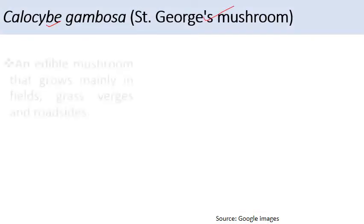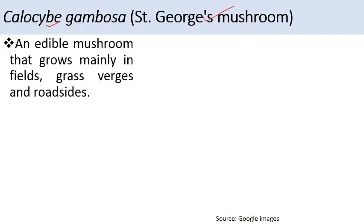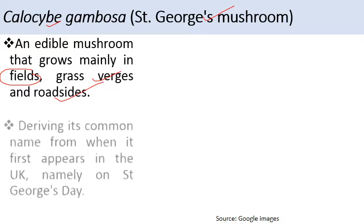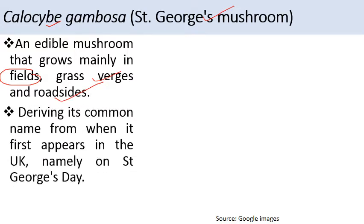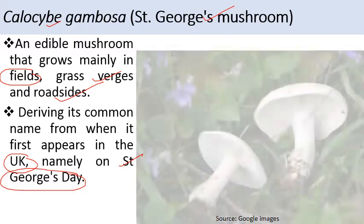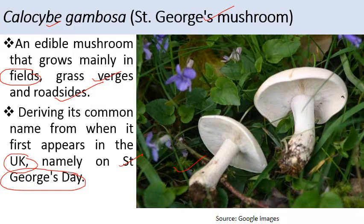The next edible mushroom is Calocybe gambosa, commonly known as St. George mushroom. It is an edible mushroom that grows mainly in fields, grass verges, and roadsides, deriving its name from when it first appears in the UK — on St. George's Day.